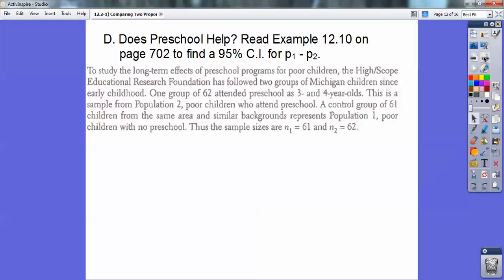To study long-term effects of preschool programs for poor children, the High Scope Educational Research Foundation has followed two groups of Michigan children since early childhood. One group of 62 attended preschool as three- and four-year-olds. This is a sample from population 2, poor children who attended preschool. A control group of 61 children from the same area and had similar backgrounds, meaning they're poor, represented population 1, and the poor children had no preschool.